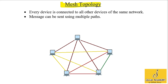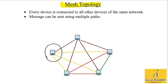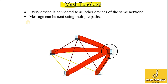Now let's discuss the mesh topology. In the mesh topology, every device is connected to all other devices of the same network. For example, this device is connected to all other devices of this network — it is connected to this device, this device, this device, and this device. As there are four other nodes connected to this network, this computer has four outgoing connections. Similarly, every other computer is also connected to all other devices. So in mesh topology, every device is connected to all other devices of the same network.